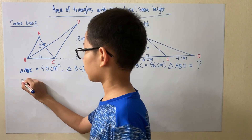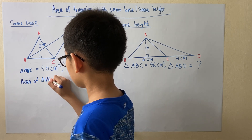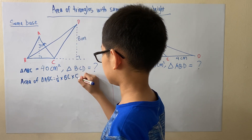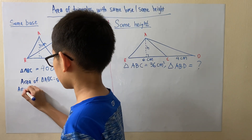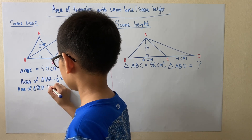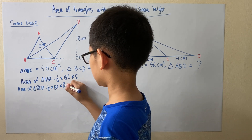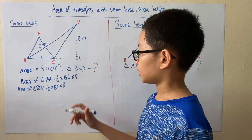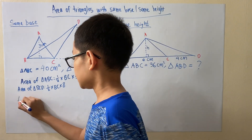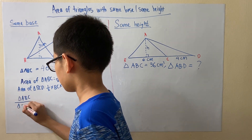So if we want to find the area of triangle ABC, it is half times base BC times height 5 cm. And the area of triangle BCD is half times base BC times height 8 cm. Now we want to find the ratio of the area between triangle ABC and triangle BCD, so we do area of triangle ABC over area of triangle BCD.